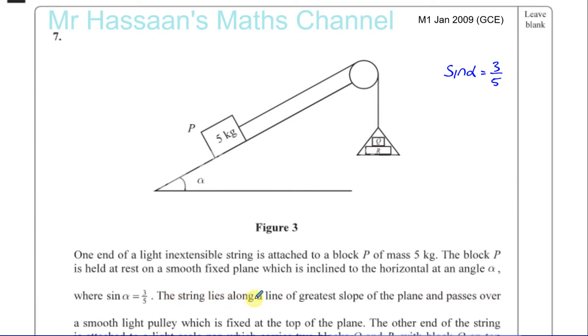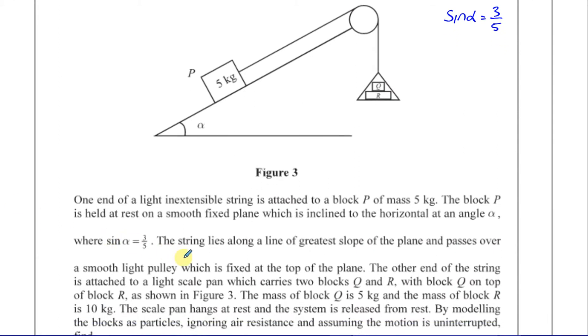The string lies along a line of greatest slope of the plane and passes over a smooth, light pulley, which is fixed at the top of the plane. The other end of the string is attached to a light scale pan.